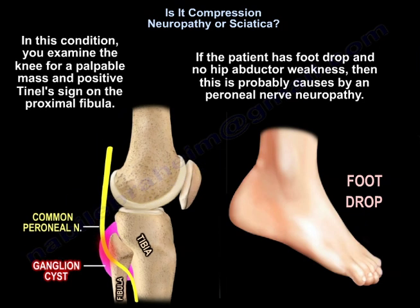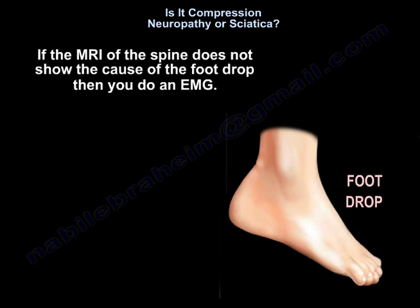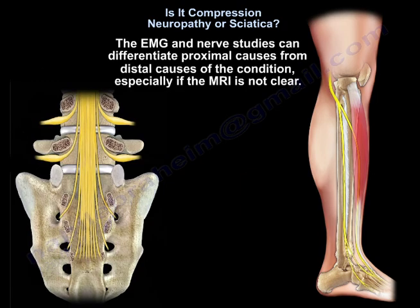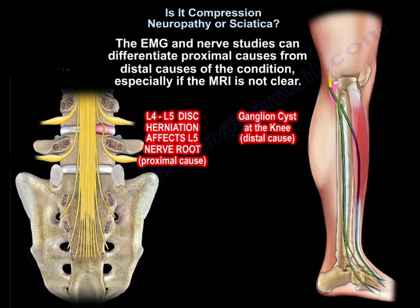In the case of peroneal neuropathy, you examine the knee for a palpable mass and a positive Tinel sign on the proximal fibula. If the patient has a foot drop, you may need to get an MRI of the spine. If the MRI of the spine does not show the cause, then you perform an EMG. EMG and nerve conduction studies can differentiate proximal causes from distal causes of the condition, especially if the MRI is not clear.